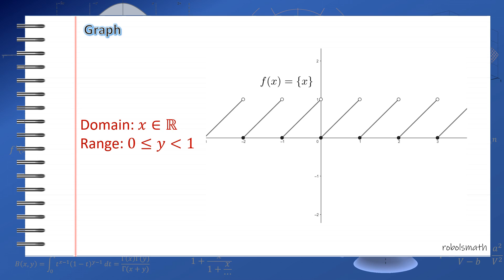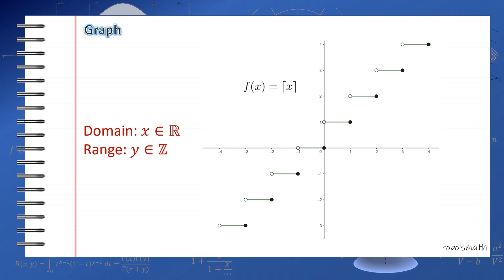And lastly, the graph of the ceiling function, it looks almost like the floor function, except it's shifted and the hollow and solid parts are reversed. For this one, your solid part is on the right. Then the hollow part is on the left. Which is like the explanation for the floor function a while ago.